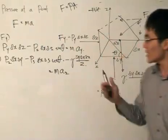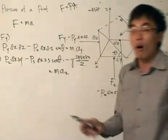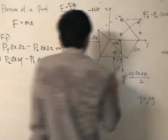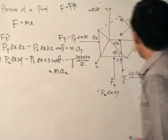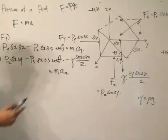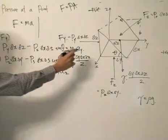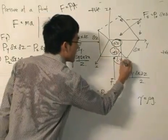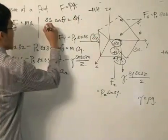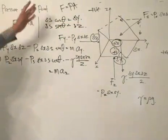At this point we still leave open the possibility that pressure S, pressure Z, and pressure Y are all different — that's what we want to find out. The next step is to use geometry to eliminate the trigonometric functions. Using the triangle with delta S, theta, delta Y, and delta Z, we can see that delta S times cosine theta equals delta Y, and delta S times sine theta equals delta Z. So we're using geometry to eliminate the trigonometry functions.